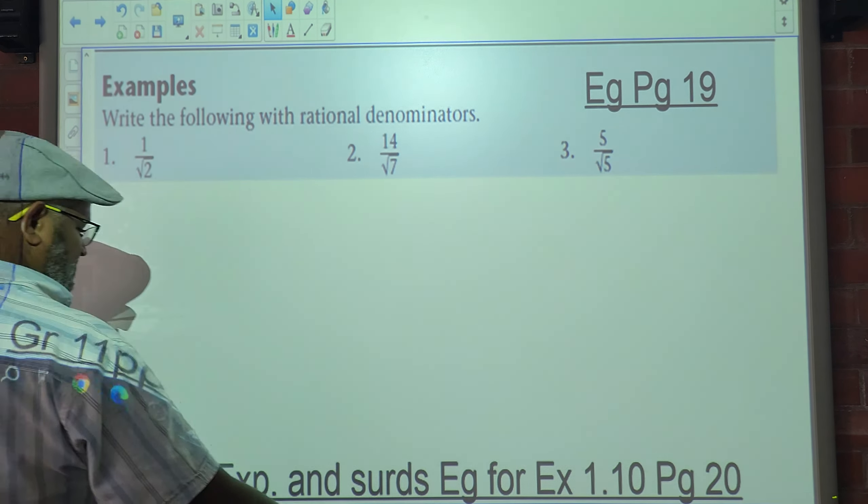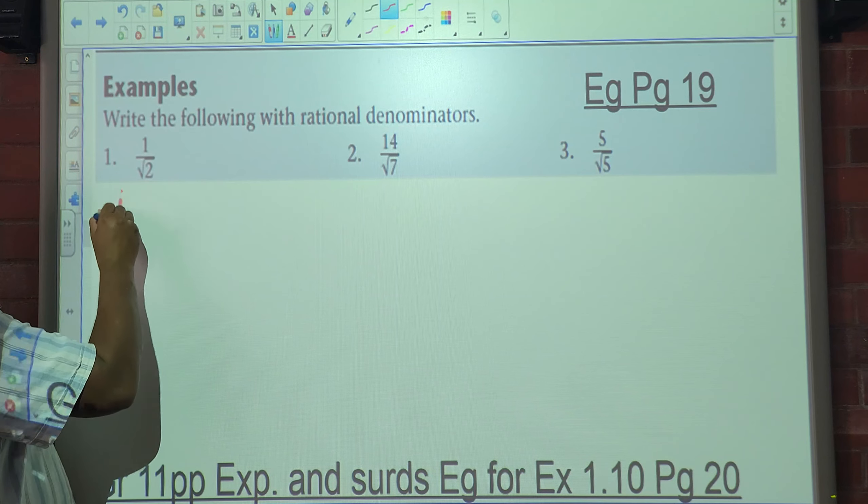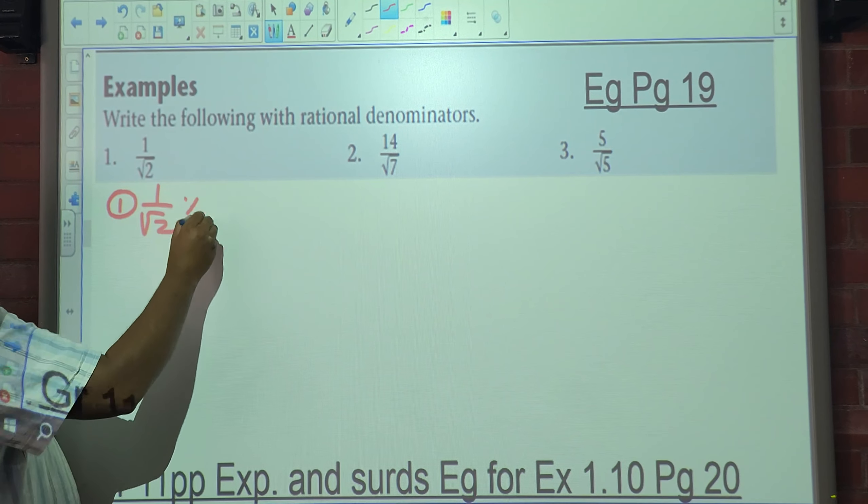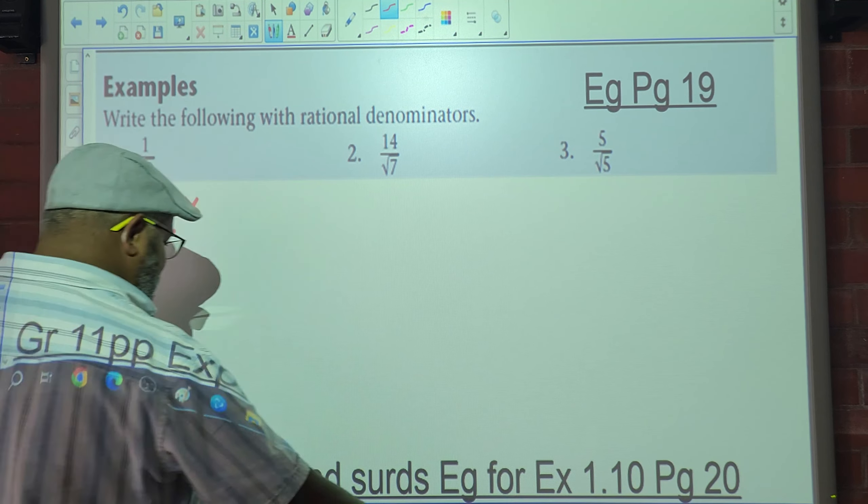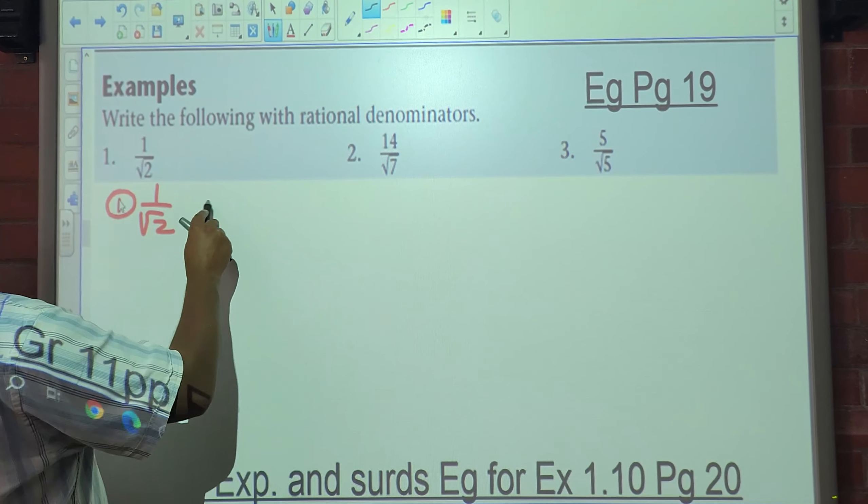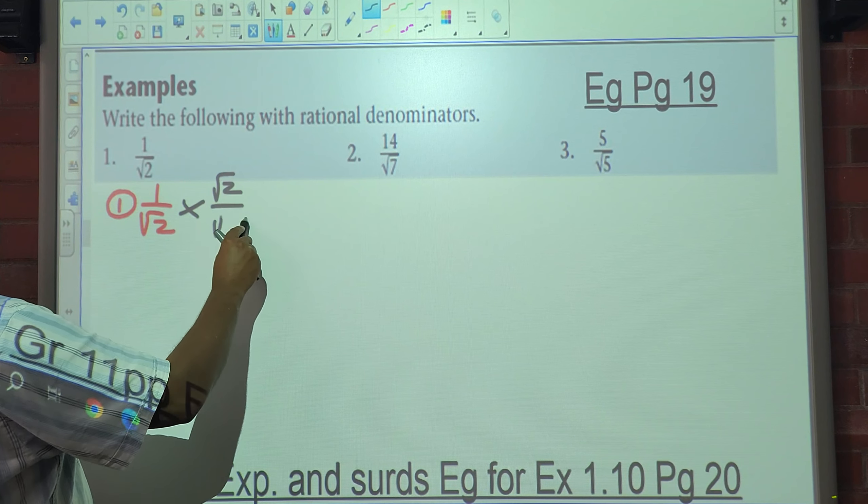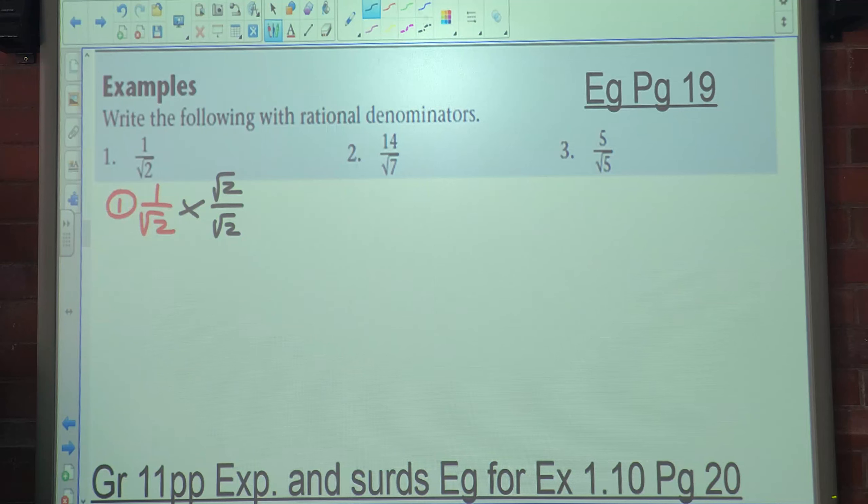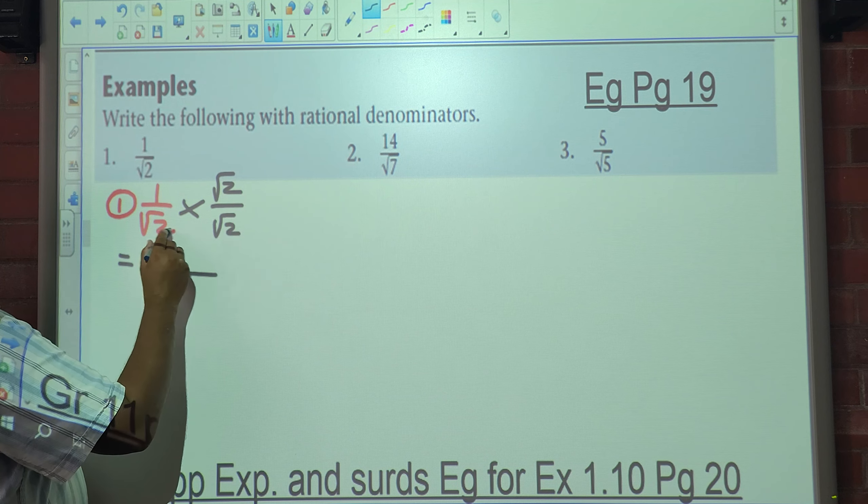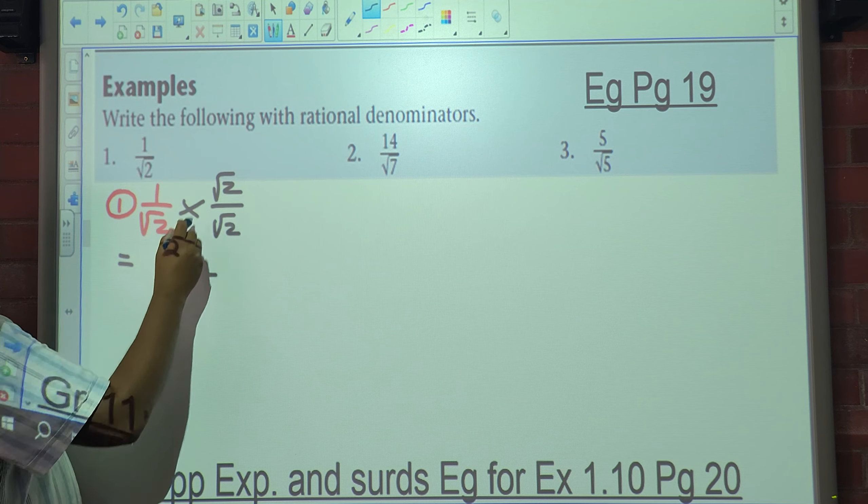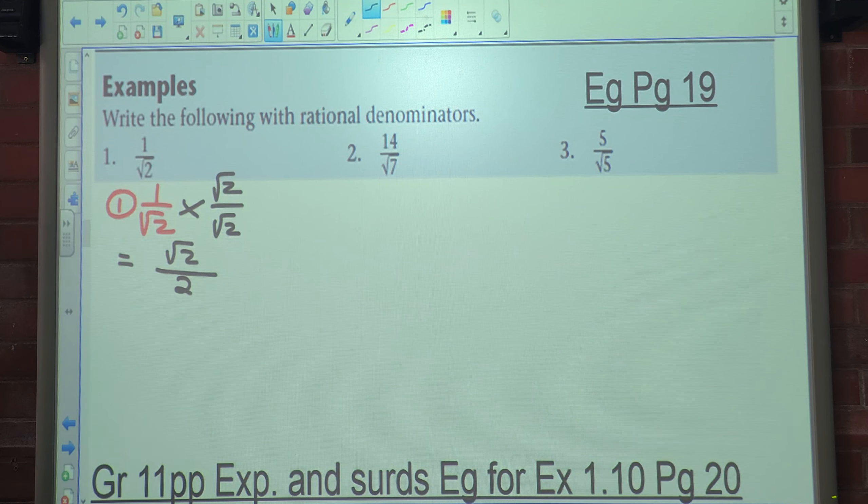So here we've got 1 over the square root of 2. So what we do is, we take 1 over the square root of 2 and then multiply this by the number 1. If I multiply this by the number 1, I don't change the value of anything. But the number 1 I choose in this case would be the square root of 2 over the square root of 2. Why do I do that? Because the square root of 2 times the square root of 2 is 2. And 1 multiplied by root of 2. You guys understand? Is there any confusion?